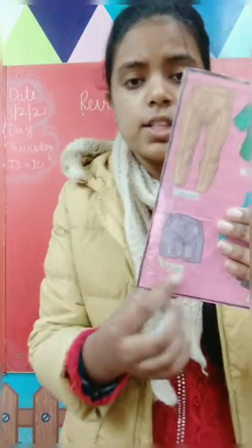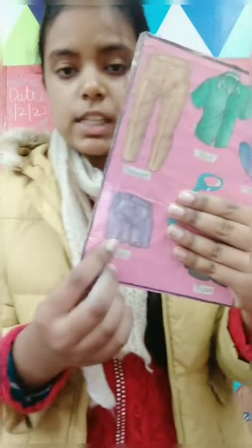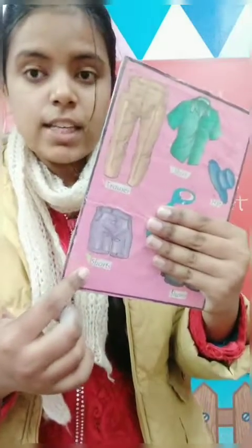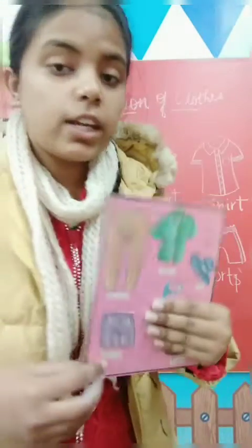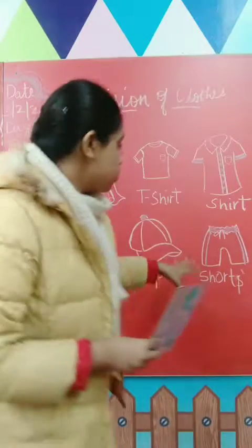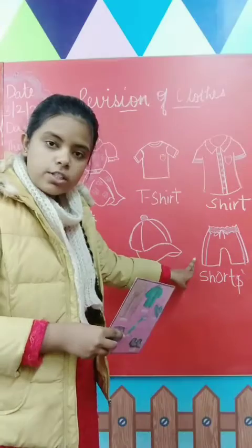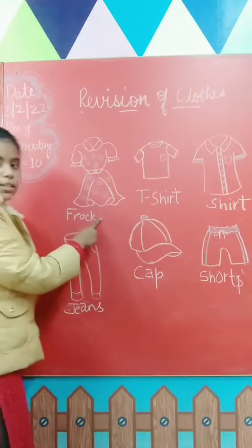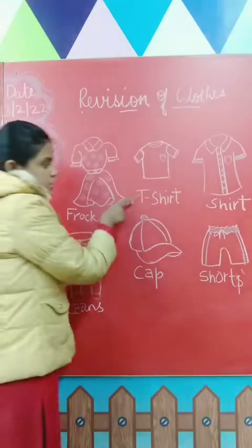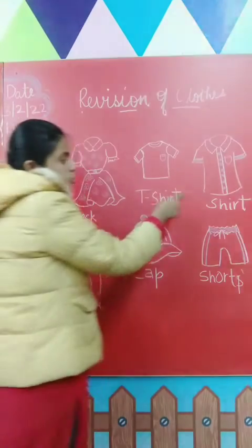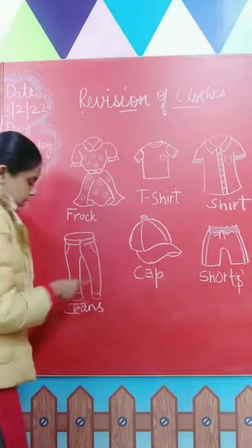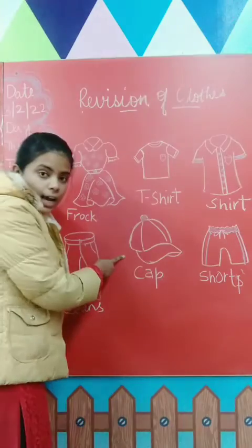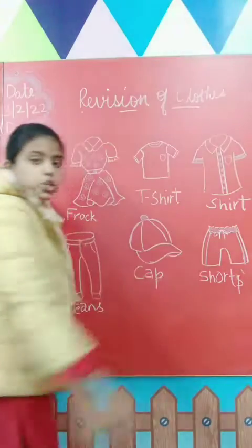And what are these? Yes, these are shorts. Can you all see shorts here? So we will revise it one more time. This is a frock, this is a t-shirt and this is a shirt. This is jeans, this is a cap, and these are shorts.